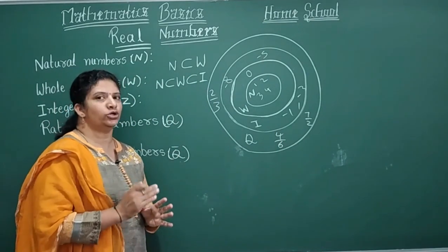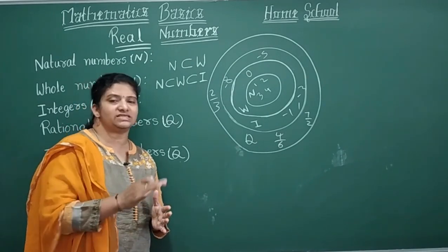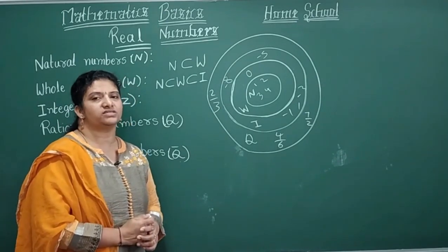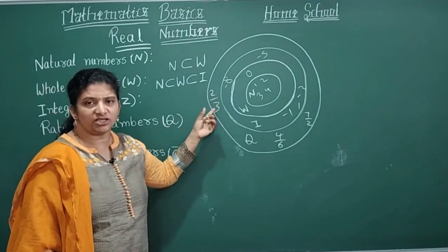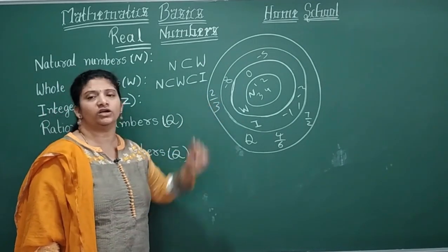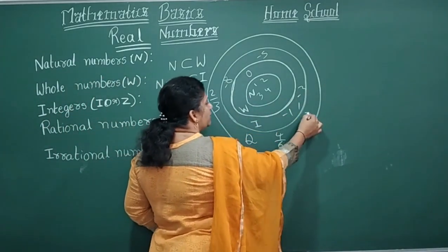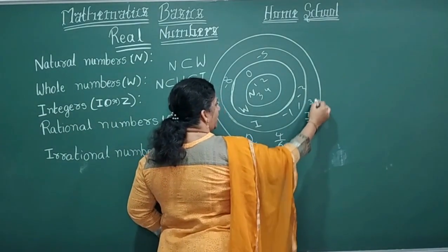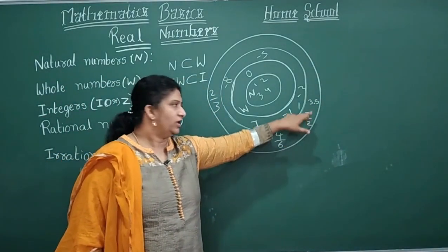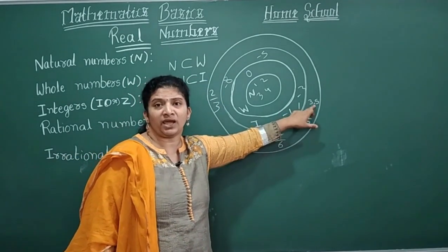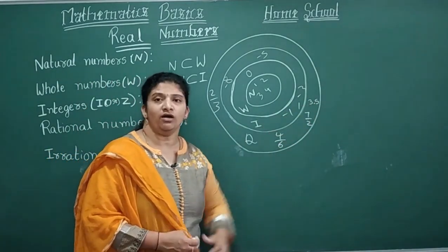Rational numbers also include fractions and decimals, where the denominator is not zero. For example, dividing 7 by 2 gives 3.5 — a decimal value. So rational numbers include fractions and decimals. The subset chain is: natural numbers ⊂ whole numbers ⊂ integers ⊂ rational numbers.